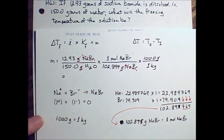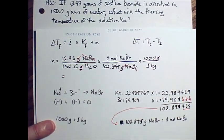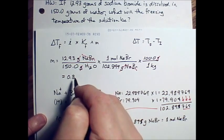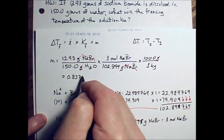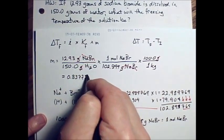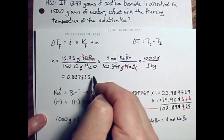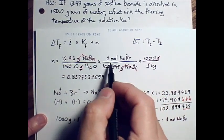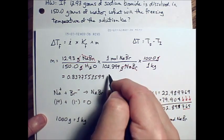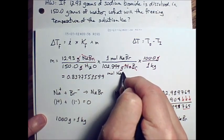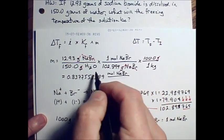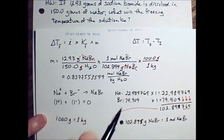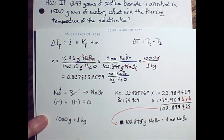So we're ready to do this math now. What did you get? 0.8 what? 3599. 3599? Yes. Okay. The units we have left then are moles of NaBr and we have on the bottom kilograms of water. And we need to round off to the correct number of significant digits.